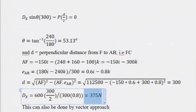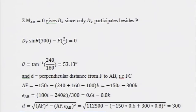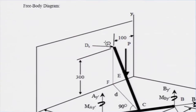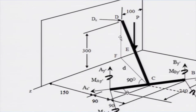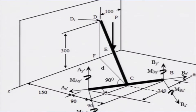Conceptually, what this means is that the reaction from the wall — the component perpendicular to axis AB — is taken, then multiplied by the distance of 300, and equated with P multiplied by d/2.